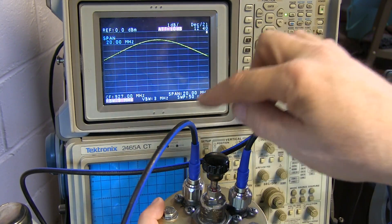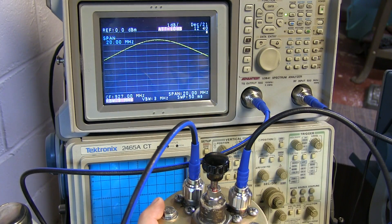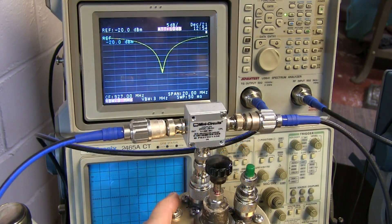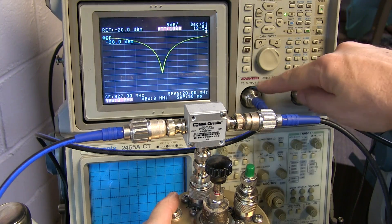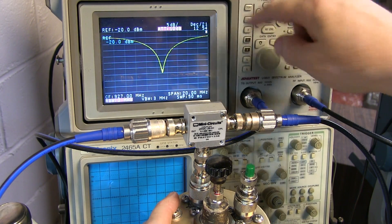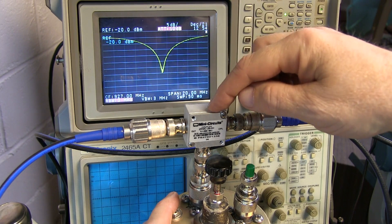But if we use the return loss measurement, we can actually determine that much more precisely. Now some analyzers have a directional coupler built in to measure return loss automatically, this one does not, so I'm using an external directional coupler here.